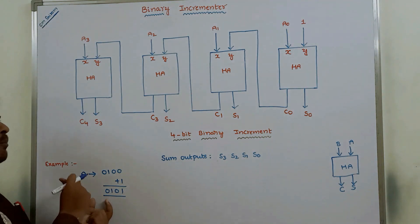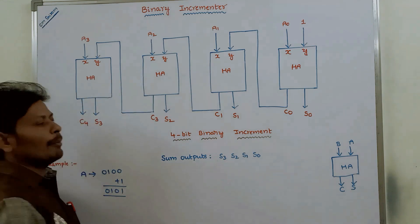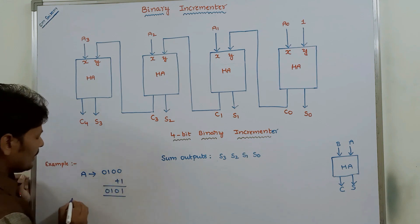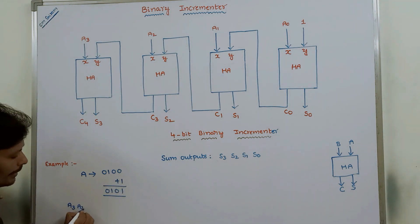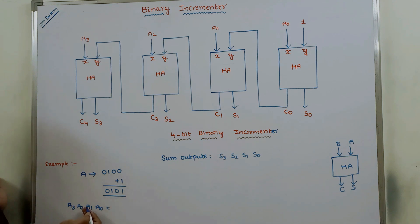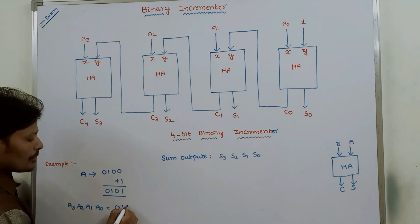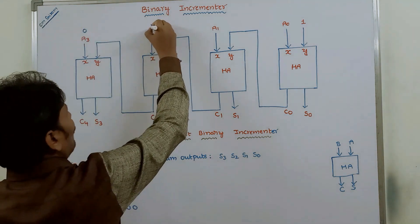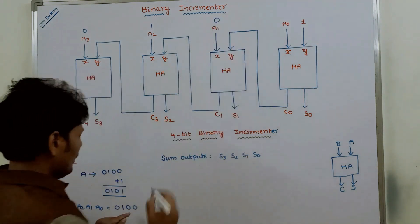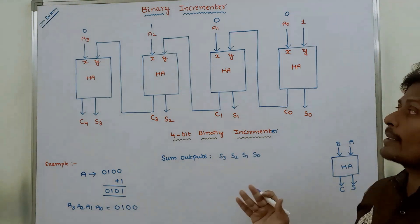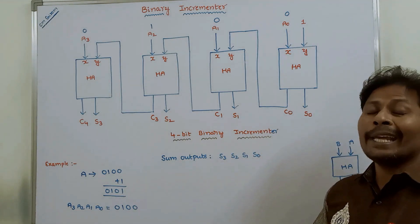Now let's see how this example works on the 4-bit binary incrementer. In register A we store 4 bits: A3, A2, A1, A0. The subscript numbers go from rightmost to leftmost, starting with A0. The bits stored are 0, 1, 0, 0 — so A3=0, A2=1, A1=0, A0=0. These bits A0, A1, A2, A3 are applied at the X inputs of each and every half adder.